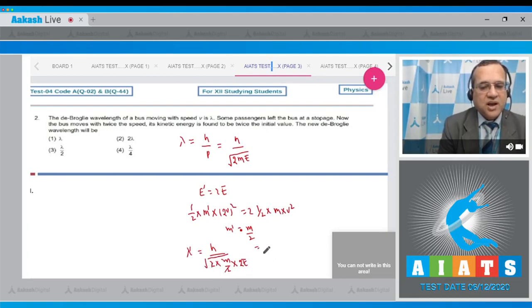And you get H upon square root of 2ME, which is same as the initial value lambda. Therefore the de Broglie wavelengths are the same. The correct option is first. Answer is 1 to this question.